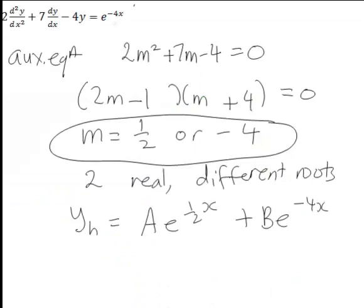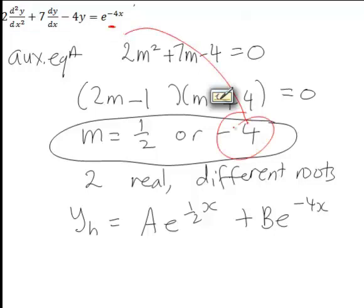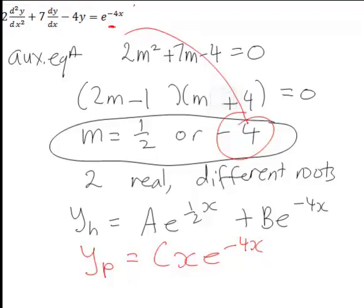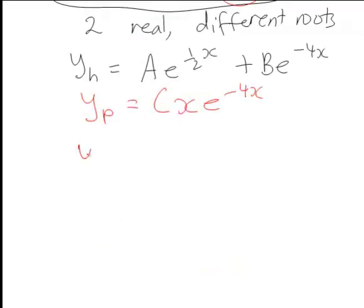Looking at e to the negative 4x, negative 4 was a single root of the auxiliary equation, so yp equals cx e to the negative 4x as a particular solution of our DE. We then find the derivatives of this and substitute them back into the original DE to find the value of c. The first derivative of yp with respect to x is c e to the negative 4x minus 4cx e to the negative 4x, using the product rule.